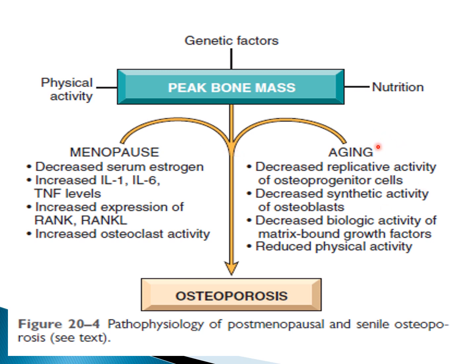With aging, there is a decrease in the replicative activity of osteoprogenitor cells — the cells that give rise to osteoblasts — and a decrease in the synthetic activity of osteoblasts, which age and reduce their ability to produce bone. There is also a decrease in the biological activity of growth factors necessary for bone growth, as well as reduced physical activity and immobilization in bedridden patients.